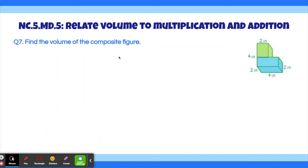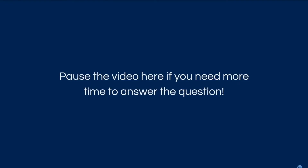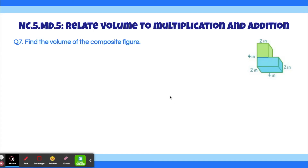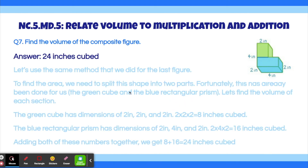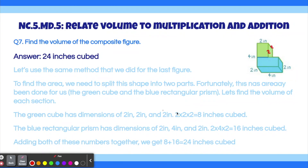Question 8. Find the volume of this composite figure. The answer to this question is 24 inches cubed. To find the volume, we split the shape into two parts — the green cube and the blue rectangular prism. The green cube has dimensions of 2 times 2 times 2, so 2 times 2 times 2 equals 8 inches cubed. The blue rectangular prism has dimensions of 2, 4, and 2, so 2 times 4 times 2 equals 16 inches cubed. Adding them together: 8 plus 16 equals 24 inches cubed, which is our answer.